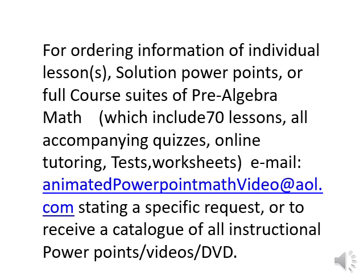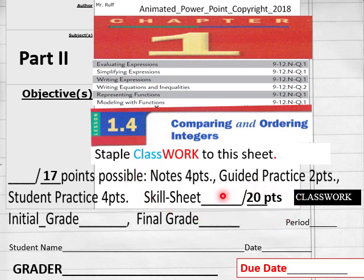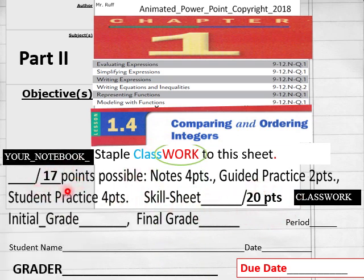Hello everybody, we're getting ready to do lesson 1.4 part 2 today. Lesson 1.4 part 2 is comparing and ordering integers. You got 20 points on your class worksheet; 17 points will go into your notebook guide.